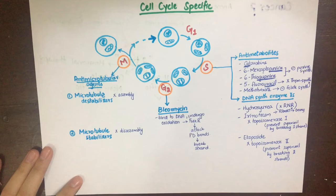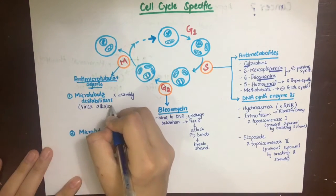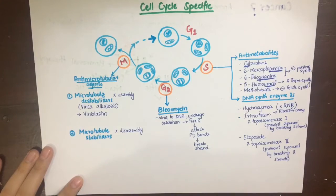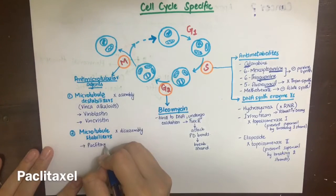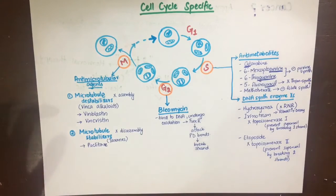Anti-microtubular agents are classified into two types: microtubule destabilizers, which inhibit assembly of microtubules at the beginning of cell division, and microtubule stabilizers, which inhibit disassembly needed at the end of division. Microtubule destabilizers include vinblastine and vincristine, which block tubulin polymerization. Microtubule stabilizers include paclitaxel, which blocks depolymerization and thus inhibits microtubule disassembly.